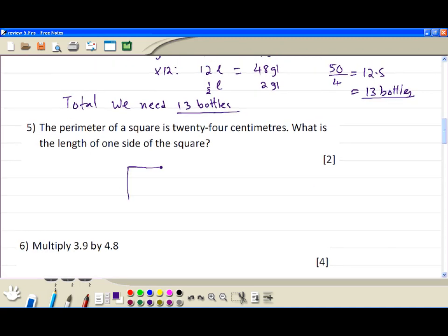Number five. The perimeter is 24. So the 4 equal sides, 24 divided by 4. So that's 6 centimeters.